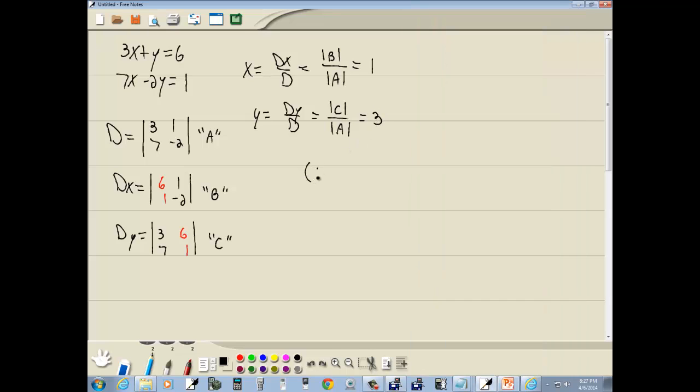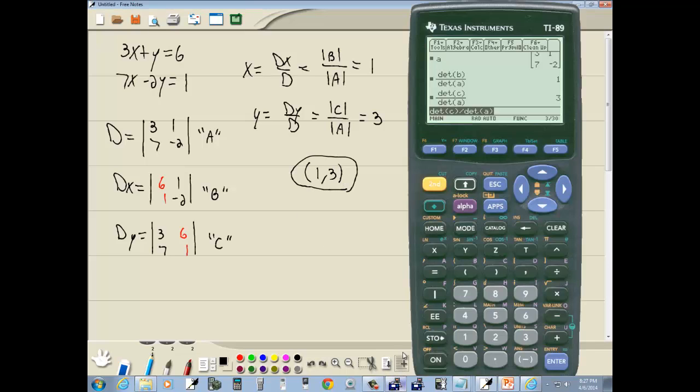So our answer will be 1, 3. And that's using the TI-89 calculator to help us do Cramer's rule.